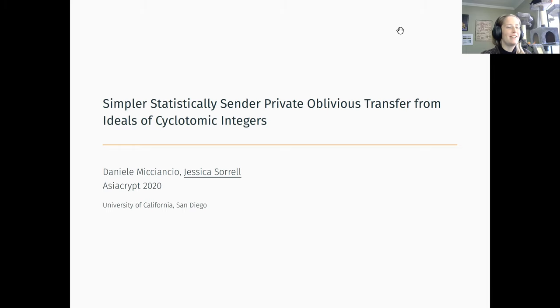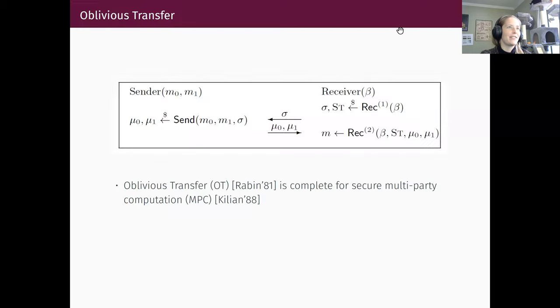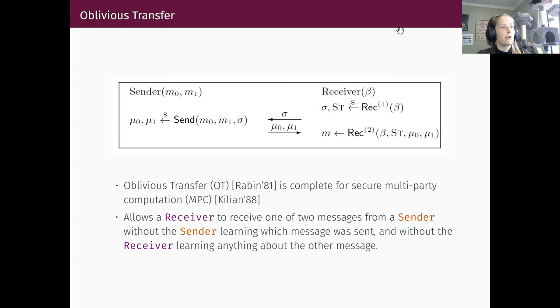Let's start by defining at least a few of those words. Oblivious transfer is a core building block for secure multi-party computation, but in this case we only have two parties, a sender and a receiver. The sender has given as input two messages, M0 and M1, while the receiver has a single bit of input. Oblivious transfer allows the receiver to obtain from the sender the message corresponding to the receiver's bit without needing to reveal its bit to the sender, and without learning anything about the other message.